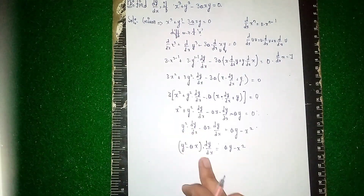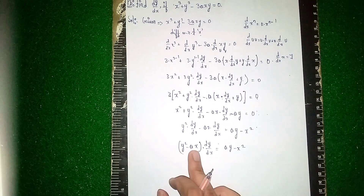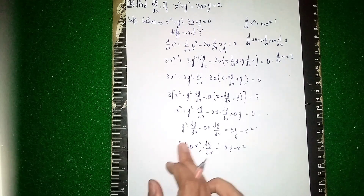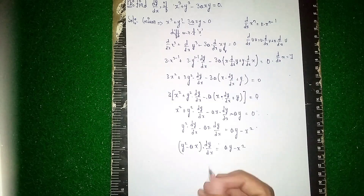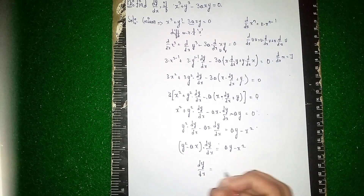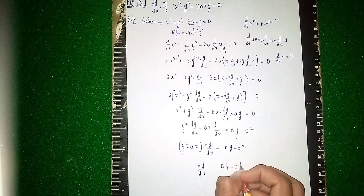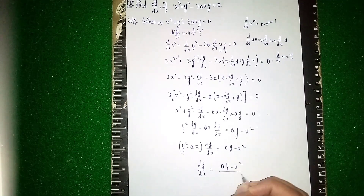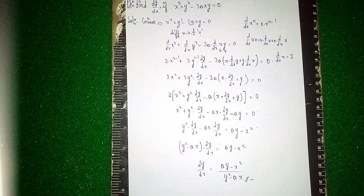We need to find dy/dx. Sending (y² - ax) to the other side by dividing, dy/dx = (ay - x²) / (y² - ax). This is our solution and our final answer. Thanks for watching.